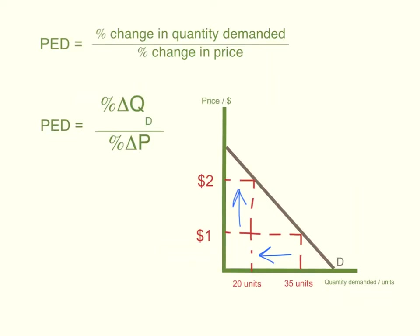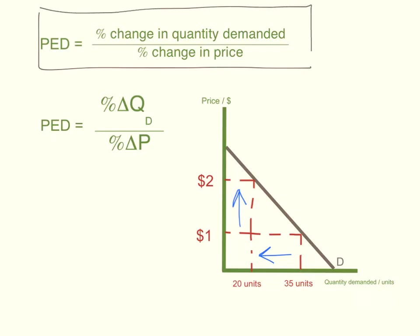Price elasticity of demand is calculated using this formula: percentage change in quantity demanded divided by percentage change in price. The symbols we use to represent this formula are percentage delta, which is the symbol for change in quantity demanded. So this means percentage change in quantity demanded divided by percentage change in price.